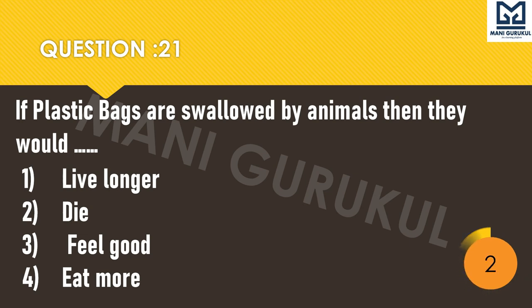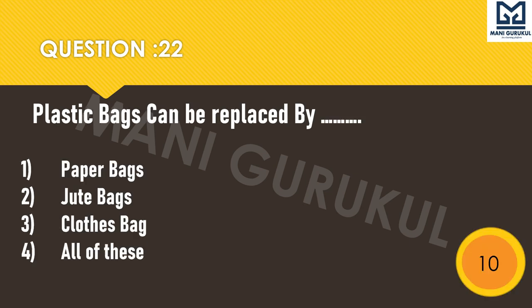You are left with only four questions. Question 22: Plastic bags can be replaced by — first: paper bag. Second: jute bag. Third: cloth bag. Fourth: all of these. Your time starts. How can plastic bags be replaced among these options?